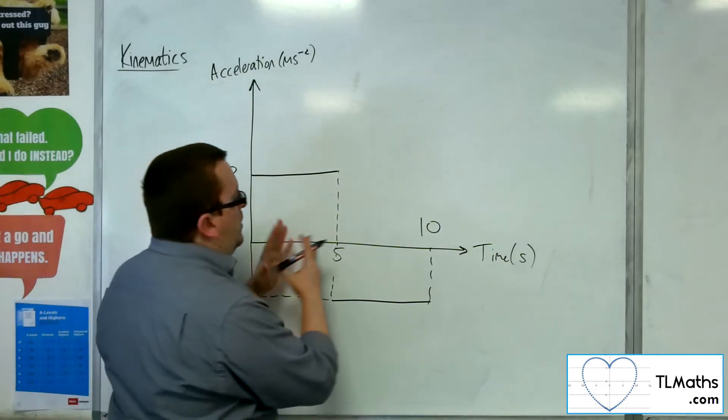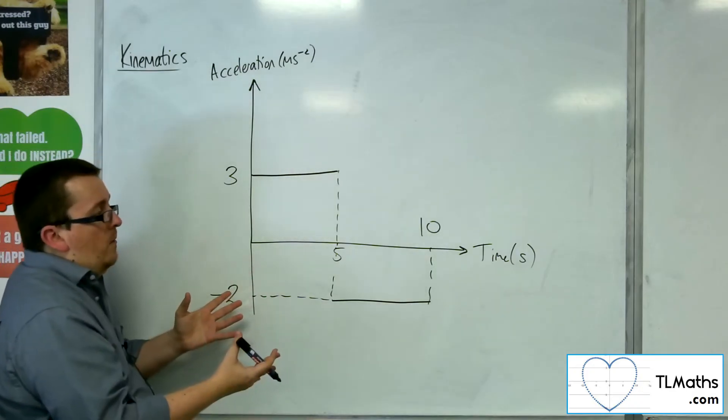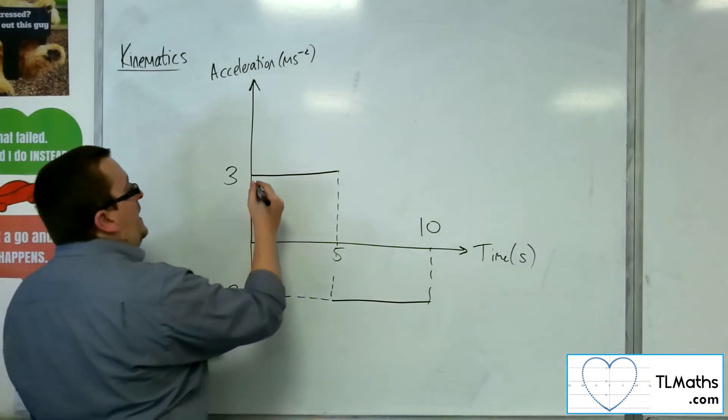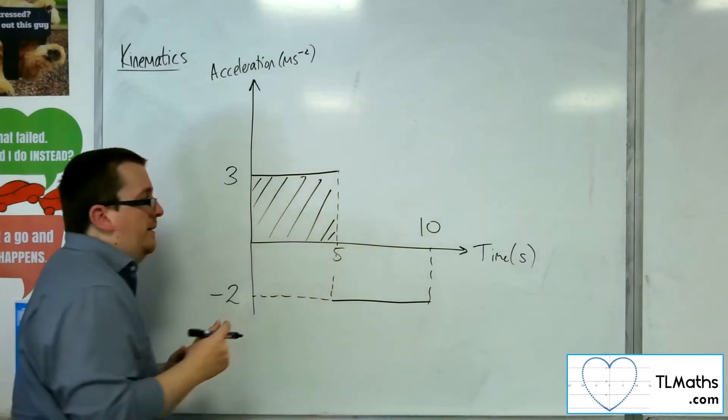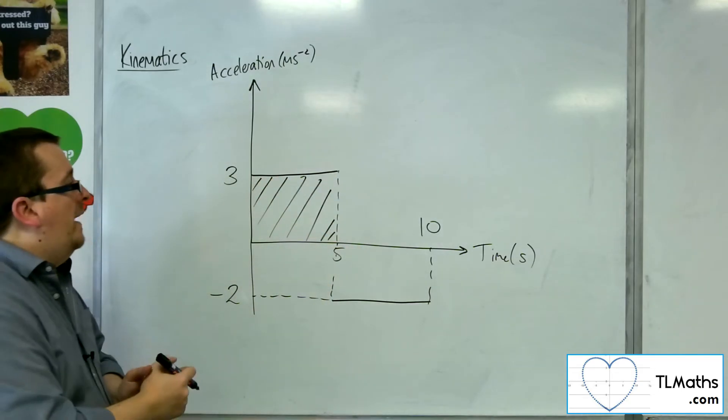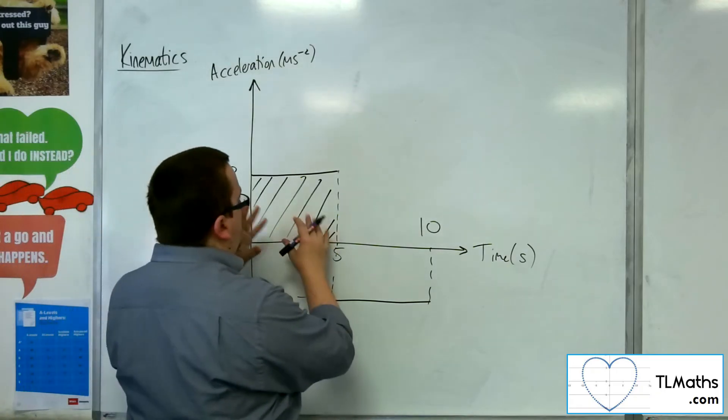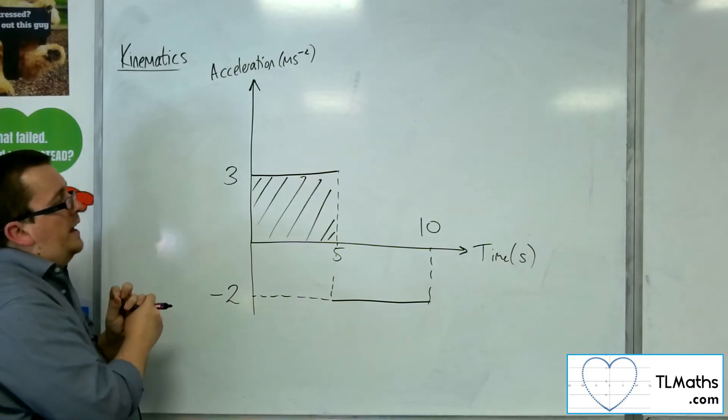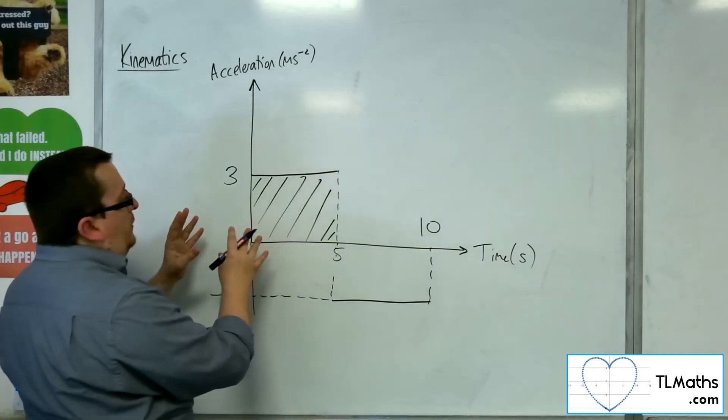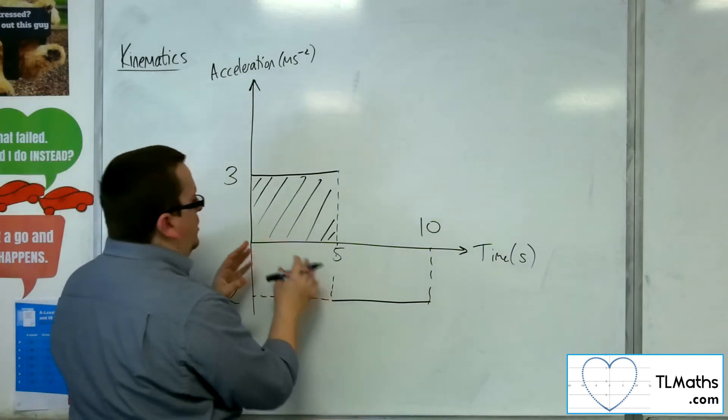So what can we gain from this? Well, the area under the graph is actually going to tell you the change in velocity over that time period. I can say from this graph that actually the acceleration has stayed the same, but the velocity has changed by 15 meters per second.